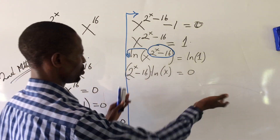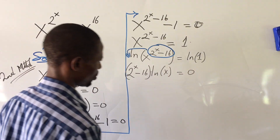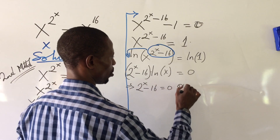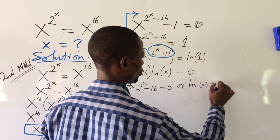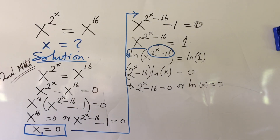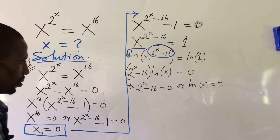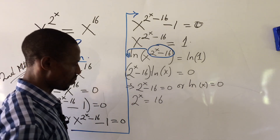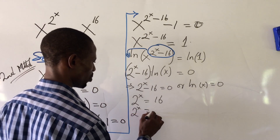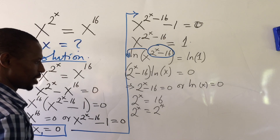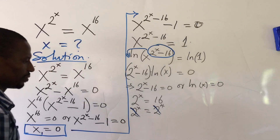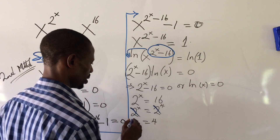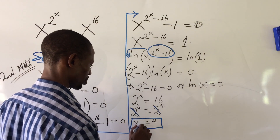Applying the zero product rule again: either 2^x minus 16 equals zero, or ln(x) equals zero. Taking the first case: 2^x equals 16, and since 16 equals 2 to the power of 4, we have 2^x equal to 2^4. The bases are the same, so equating exponents gives x equal to 4. This is our second root.